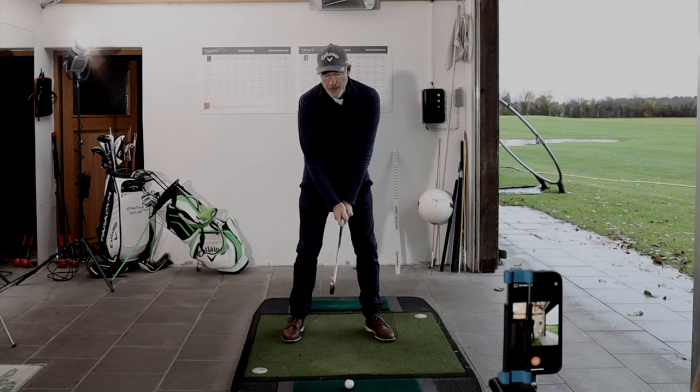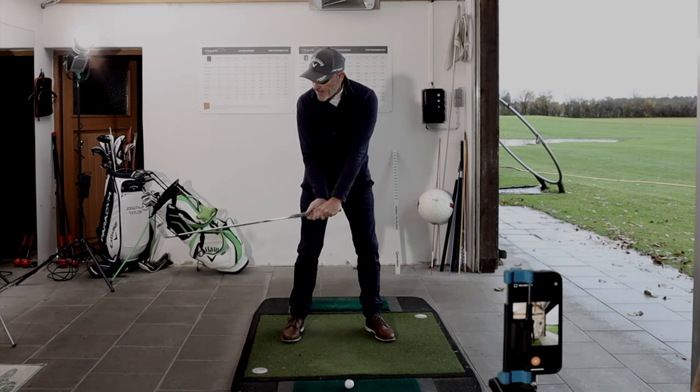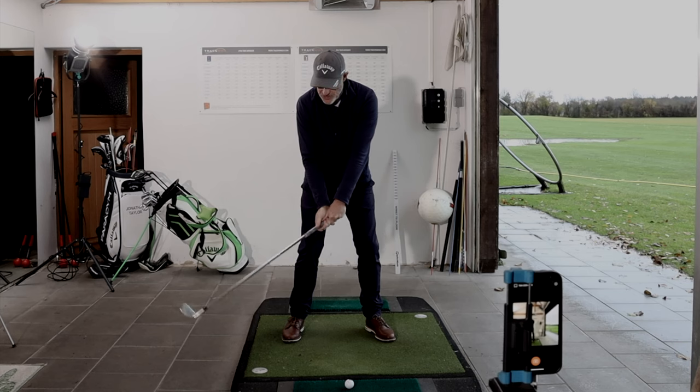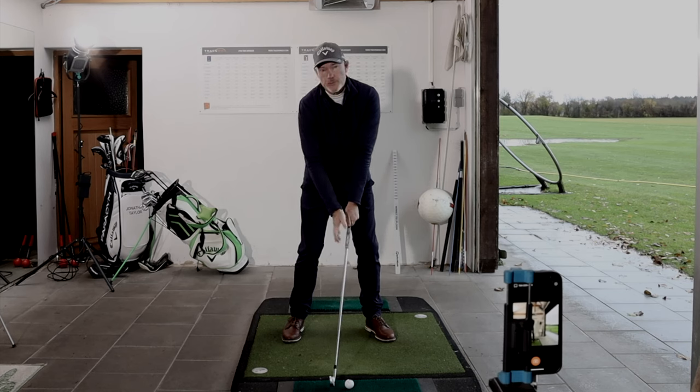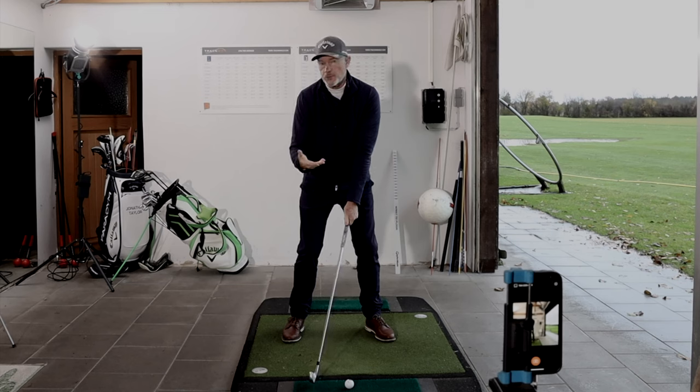So we're picking the club up and swinging it behind the ball. Unfortunately if I just release this wrist angle it will come into the back of the ball in the way that I wanted to hit the ball.